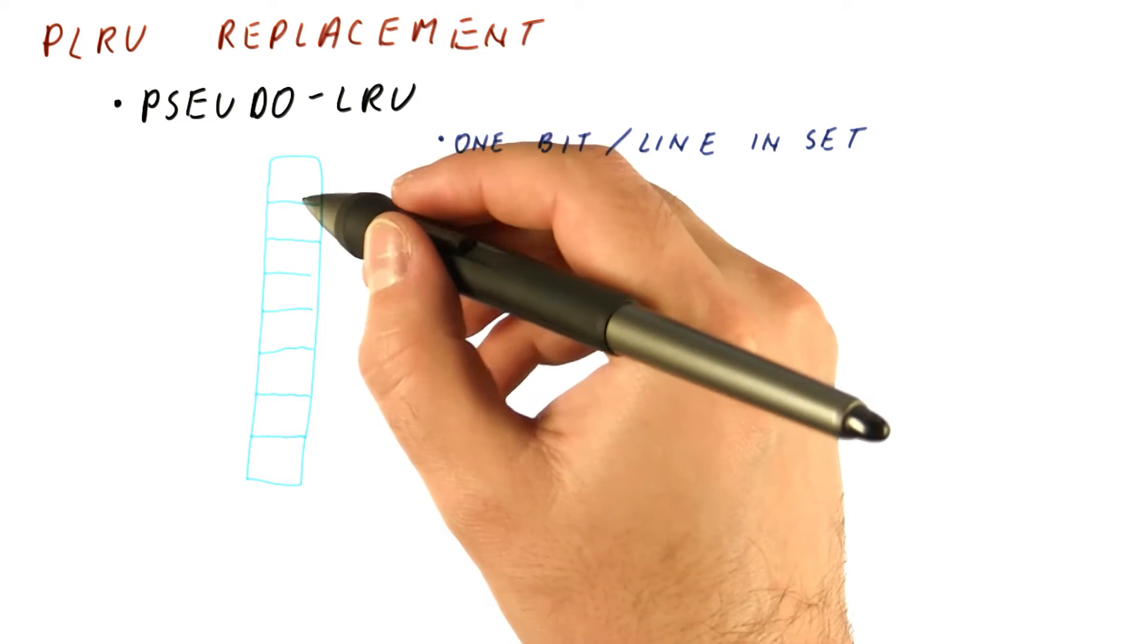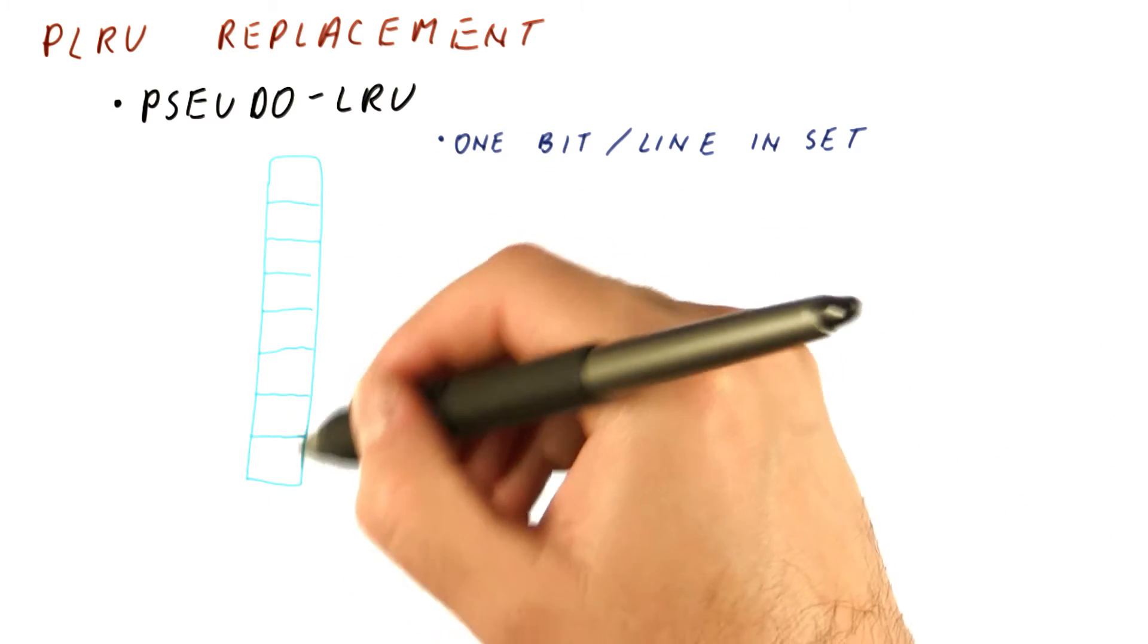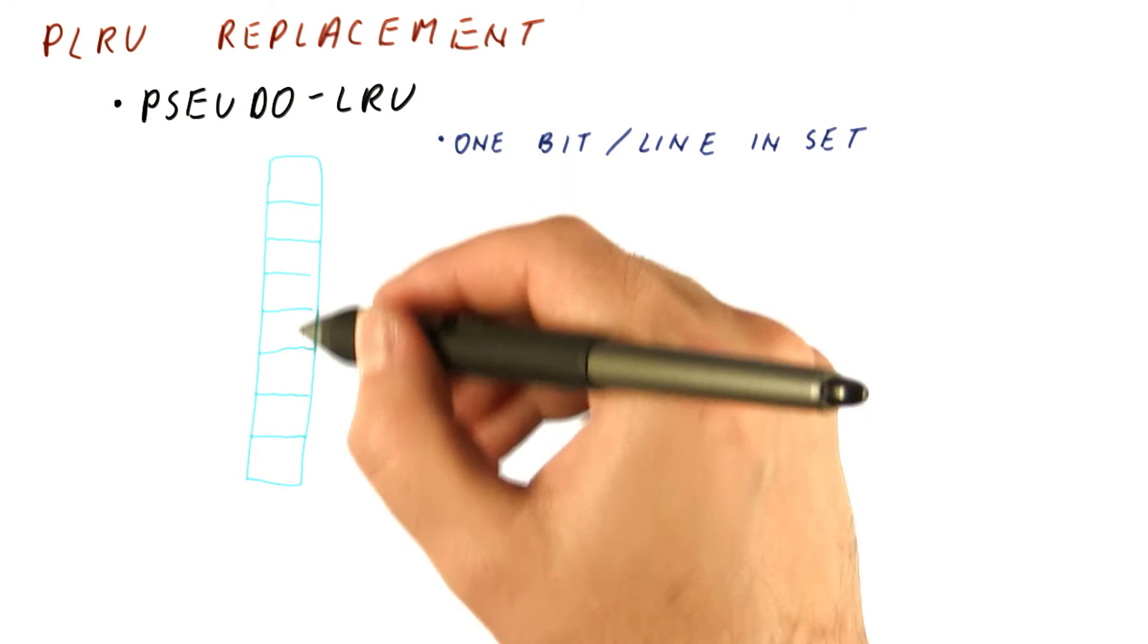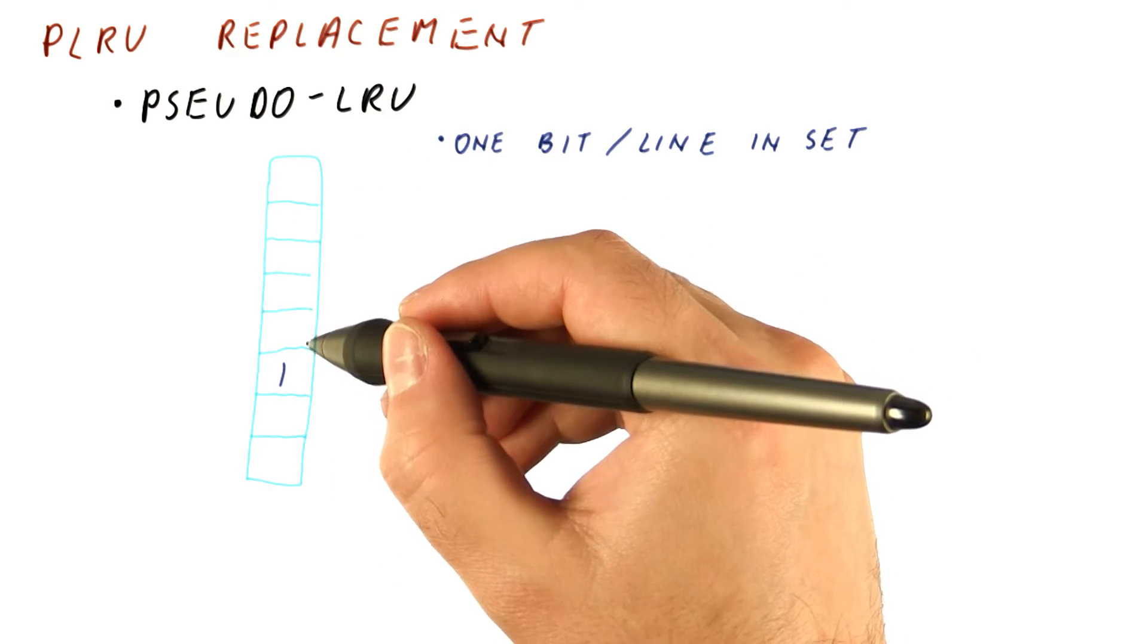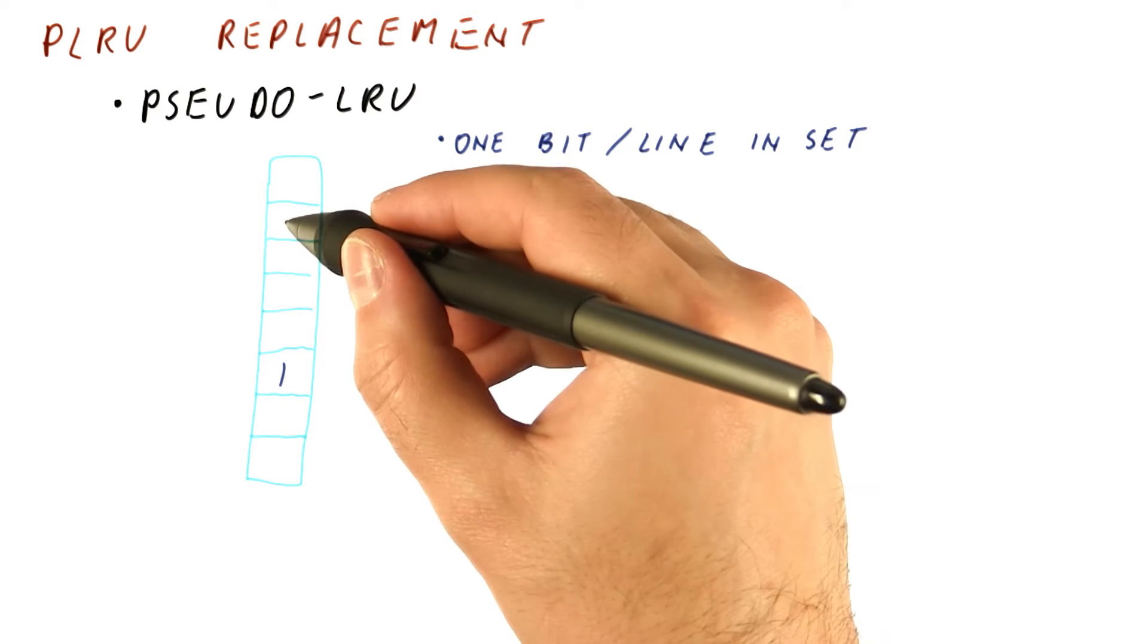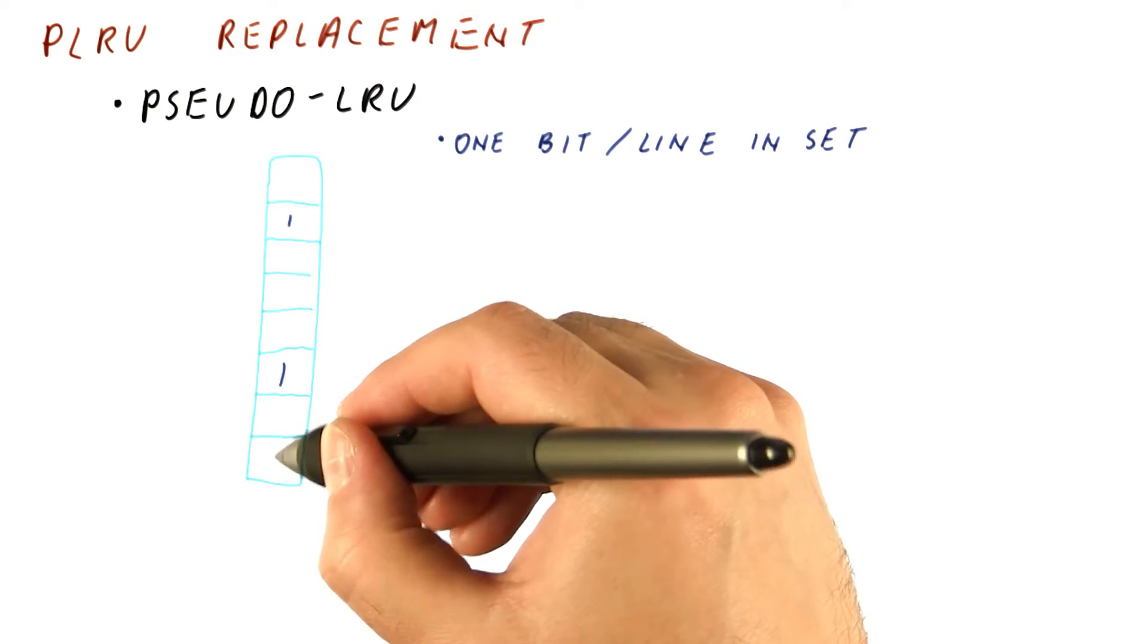So how does pseudo-LRU work? All of the bits start out at zero. What we will do is every time a line is accessed, we will set its bit to one. For example, this one becomes one, this one becomes one, and this one becomes one.